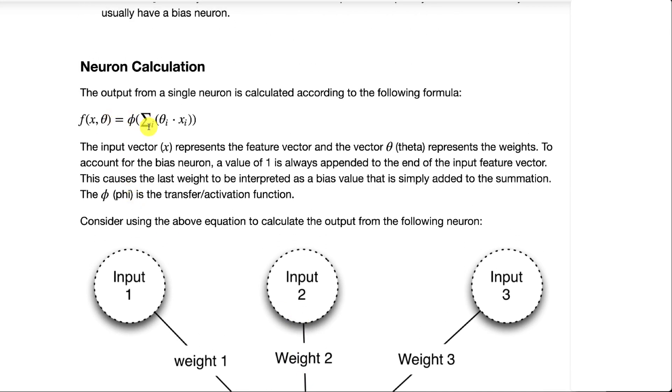That value then gets passed into the activation function, and that becomes the output of that neuron. That's what this equation is basically showing you here. It's essentially the summation of all the thetas, thetas are weights.